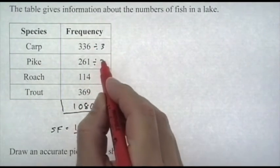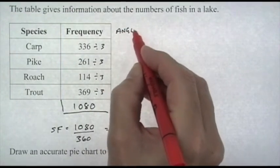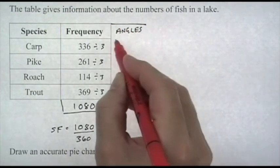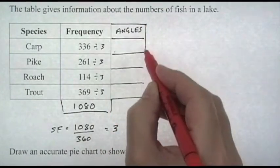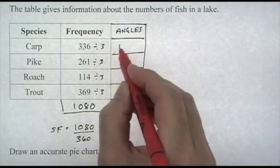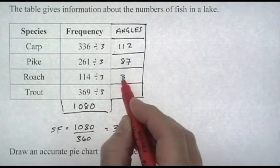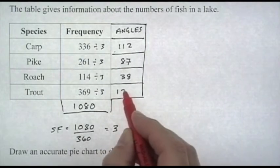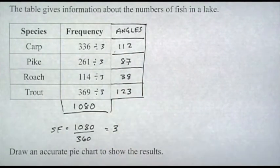However, this time we have to scale down the numbers in the table, so we're not multiplying—we divide them all by 3. We change the 1,080 total to 360. Add another column and divide all the frequencies by 3: that comes to 112, pike is 87, roach is 38, and trout is 123. Check that—should come to 360, which is perfect for the degrees in a circle.